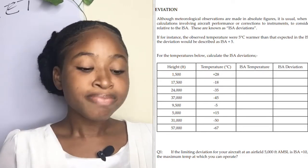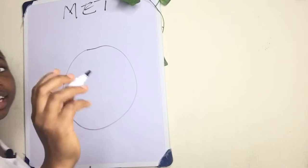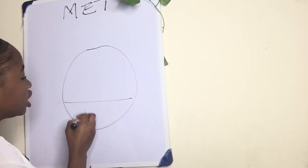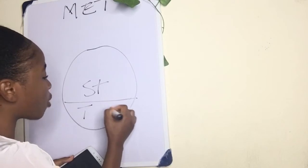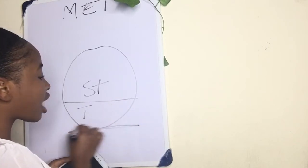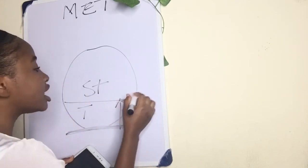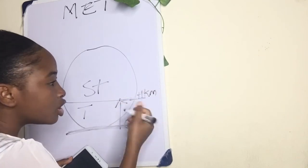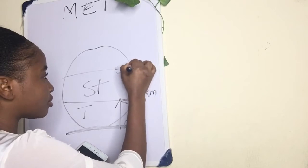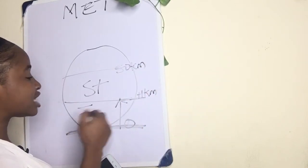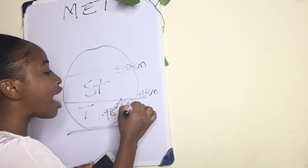I'd also like to explain some things with this diagram, as we discussed yesterday — the troposphere and stratosphere are the major ones we'll look at today. The height from where the earth starts up to the tropopause is about 11 kilometers, so you have 0 to 11 km. The stratosphere extends to about 50 km. From the surface, the lapse rate — the temperature change — is about 1.98 degrees Celsius per 1,000 feet.